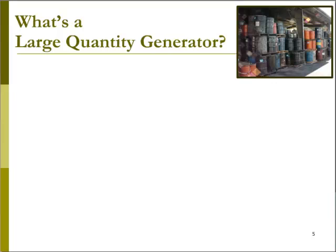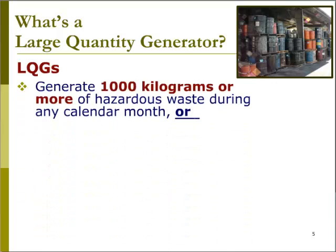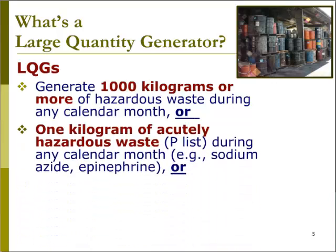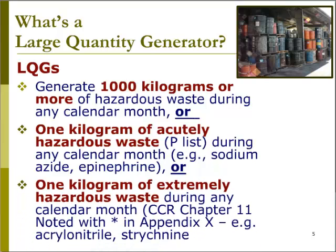What is a large quantity generator? Large quantity generators of hazardous waste generate 1,000 kg or more of hazardous waste during any calendar month, or they generate 1 kg of acutely hazardous waste — waste from the P listing such as sodium azide or epinephrine — during any calendar month, or they generate 1 kg of extremely hazardous waste during any calendar month. Extremely hazardous wastes are noted with an asterisk in Appendix X of the regulations; examples include acrylonitrile and strychnine.